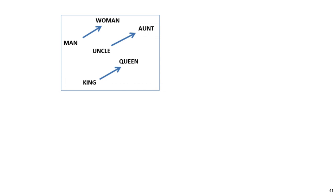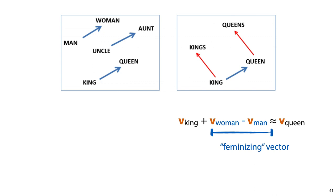What's more, if we then add this vector to the embedding vector for the word 'king', and look at which embedding vector is closest to the result, it's the embedding vector for the word 'queen'. Compare this with the smiling vector we saw in the autoencoder lecture. Word2vec is not an autoencoder, but we are learning a similar kind of latent space model.